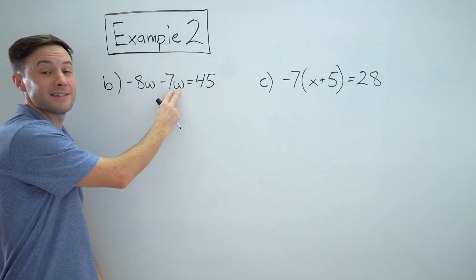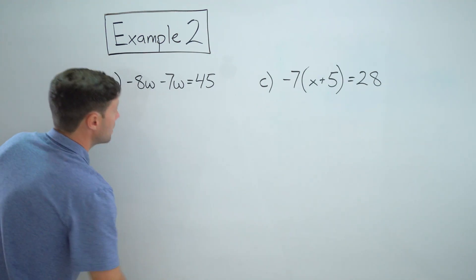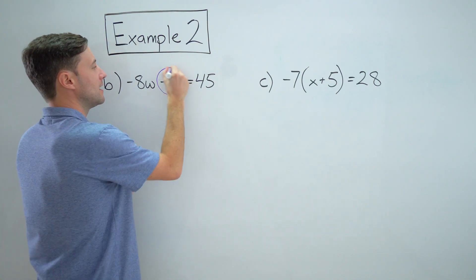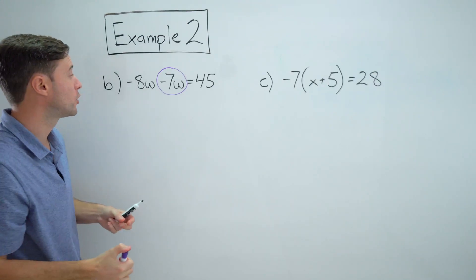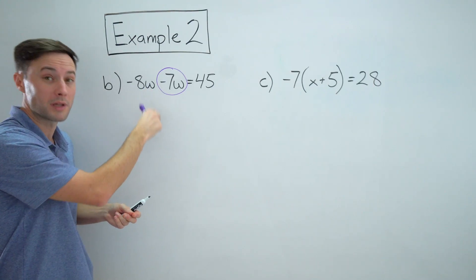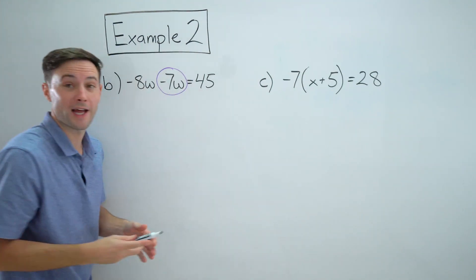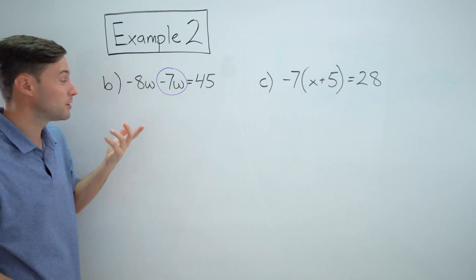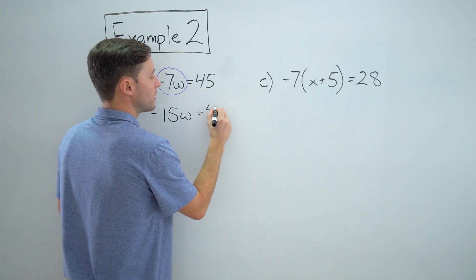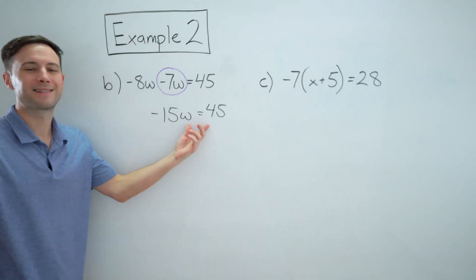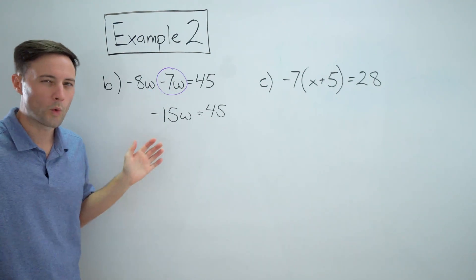Negative eight W minus seven W. You can think of it like plus a negative seven W, right? If I change this into an addition equation, it would be negative eight W plus a negative seven W, right? So those are like terms. Negative eight W plus a negative seven W is going to give me negative 15 W equals 45. So look how much simpler our equation looks after we've simplified a little bit. Way easier.